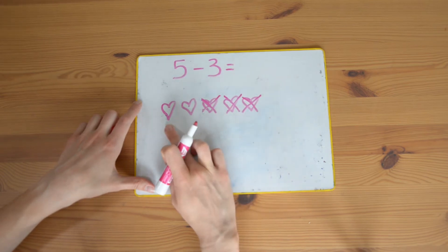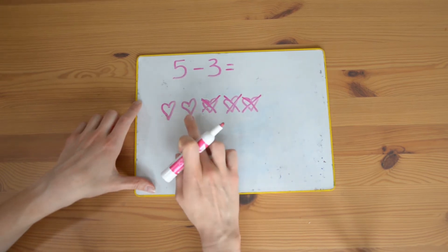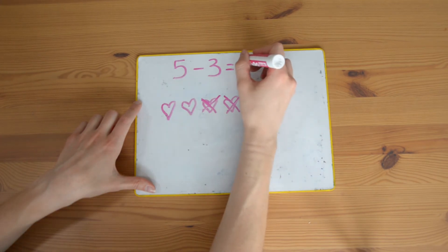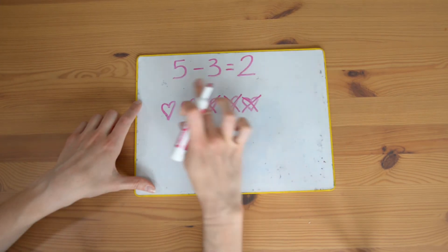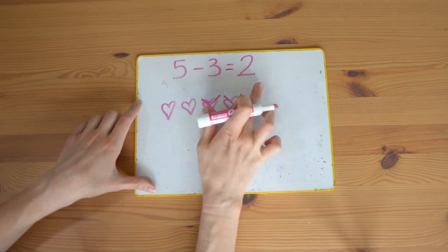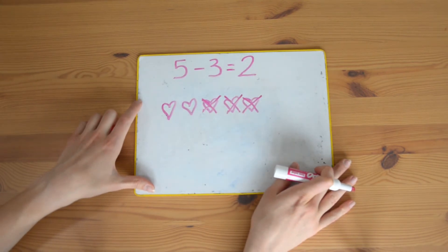So I had five love hearts, but I had to take three away. How many do I have left? One, two. Five take away three equals two. Let's have another go.